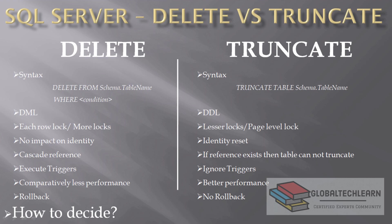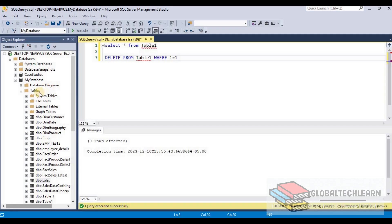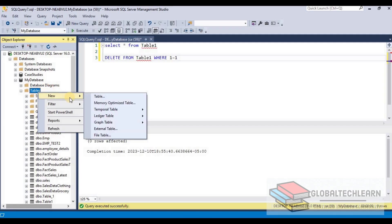The DELETE statement can also work with cascade references. That means if we want to delete data from a table that has a reference to another table, and we also want to remove the related data from the referenced table, the DELETE statement can handle that. Let's see this cascade reference in SQL Server.